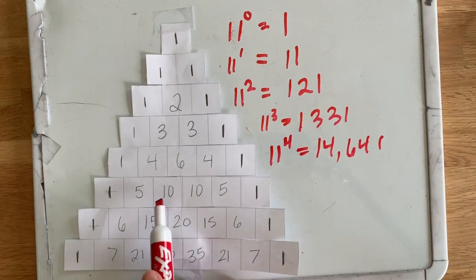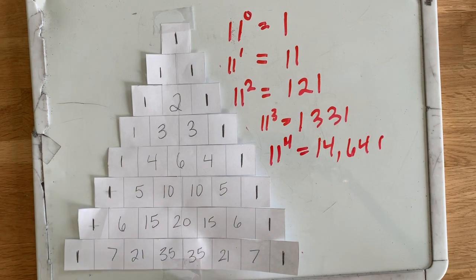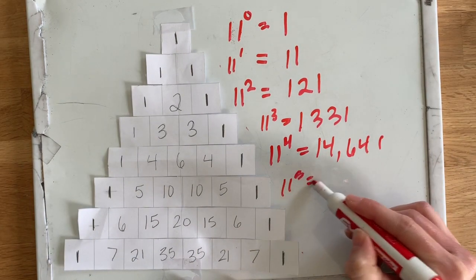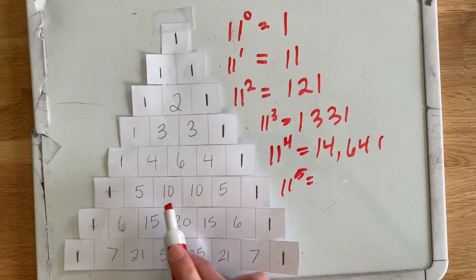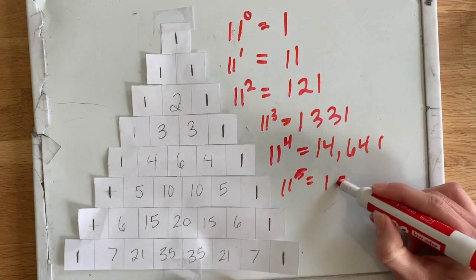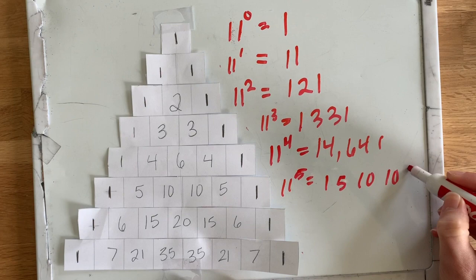11 to the fourth power is 14,641. So this is where it gets kind of tricky because now we have two digits. So 11 to the fifth power, let's just write out what it says here: 1, 5, 10, 10, 5, 1.